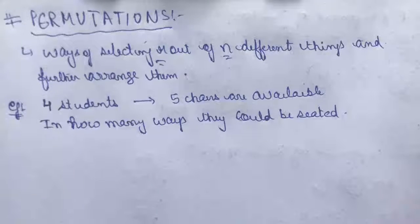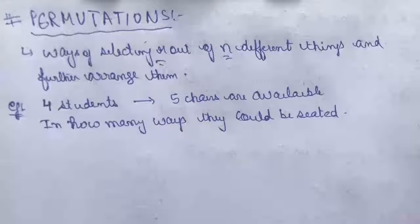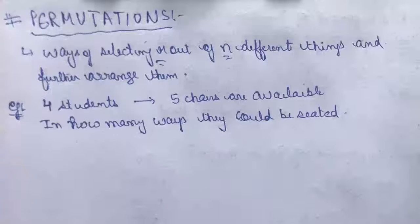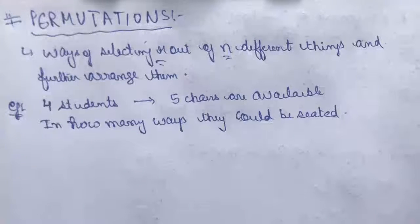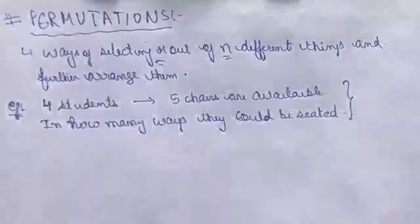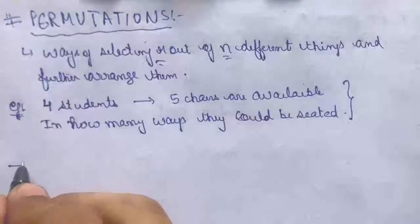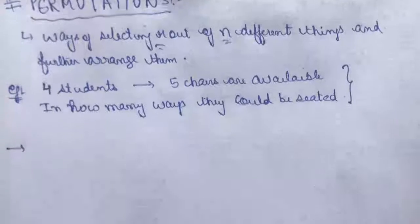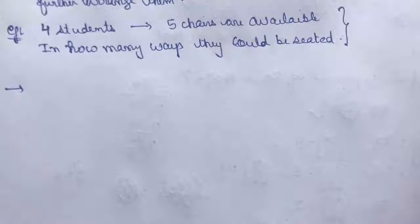There are 5 chairs, so from those 5 chairs we will have to select 4 chairs and then see in how many ways those 4 students could be arranged among the 4 selected chairs. That is how we are going to calculate the number of permutations. This is what is called permutation.